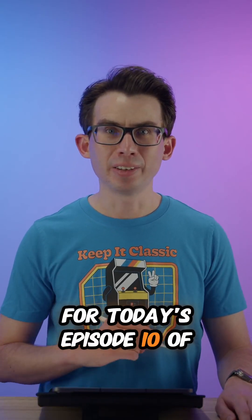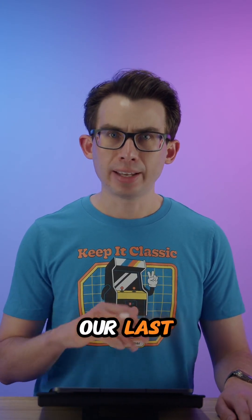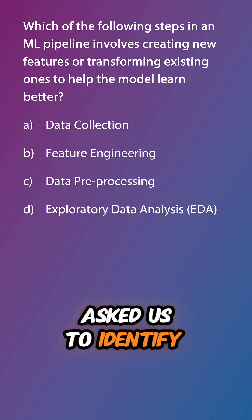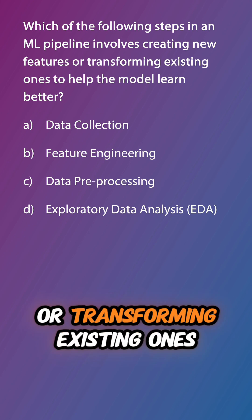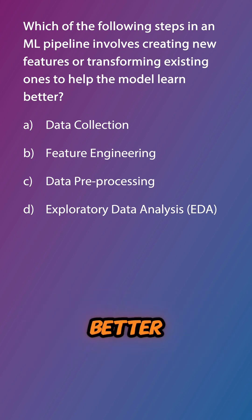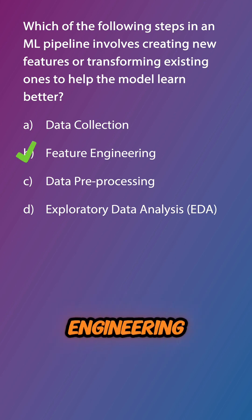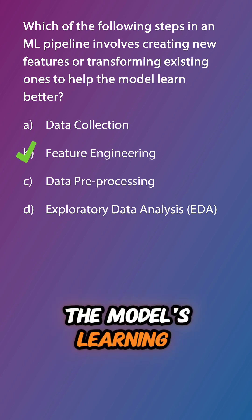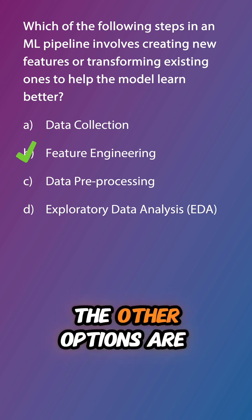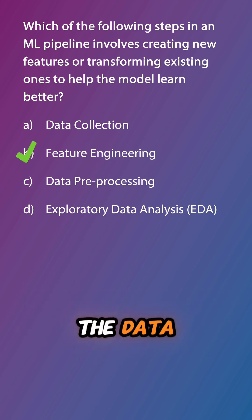Welcome back for today's episode 10 of AI Practitioner Exambytes. The review question from our last episode asked us to identify the step in the ML pipeline which involves creating new features or transforming existing ones to help the model learn better. The correct answer is B, feature engineering, as this is the step where we create or transform features to improve the model's learning capacity. The other options are incorrect as they involve either initial collection and investigation of the data or basic cleaning up of the data.